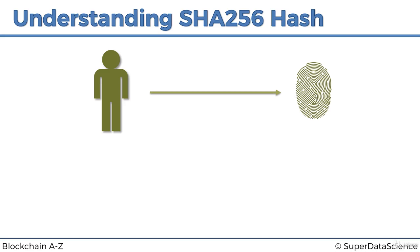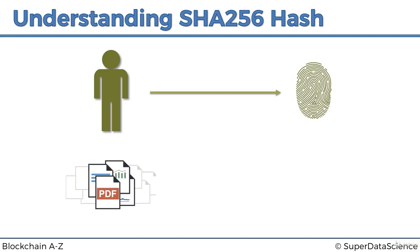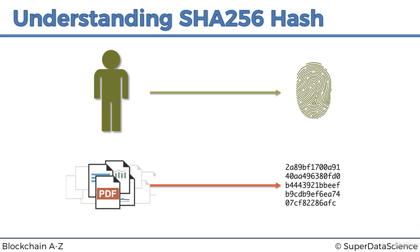What if we could take the same principle and apply it to digital documents? What if we could come up with a fingerprint that would identify digital documents for us? Such a fingerprint exists — it's called the SHA-256 hash.